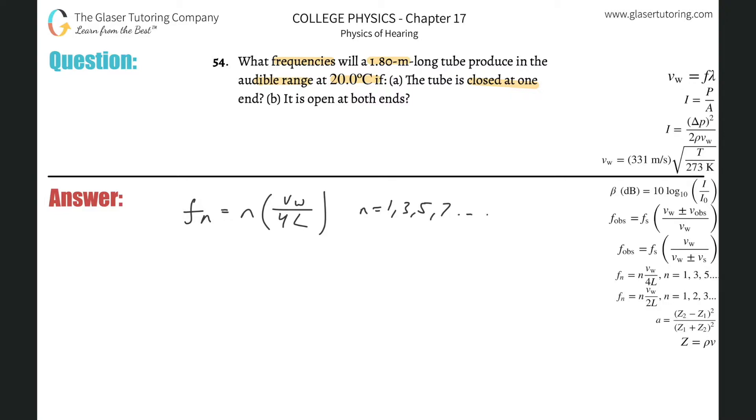So basically now what do they tell us? Well, they tell us the length of the tube, right? So we know L and they give us a temperature. What can we find when we know temperature in this formula? Well, we can solve for the velocity of the sound wave. We have the formula 331 times the square root of T, the Kelvin temperature over 273.